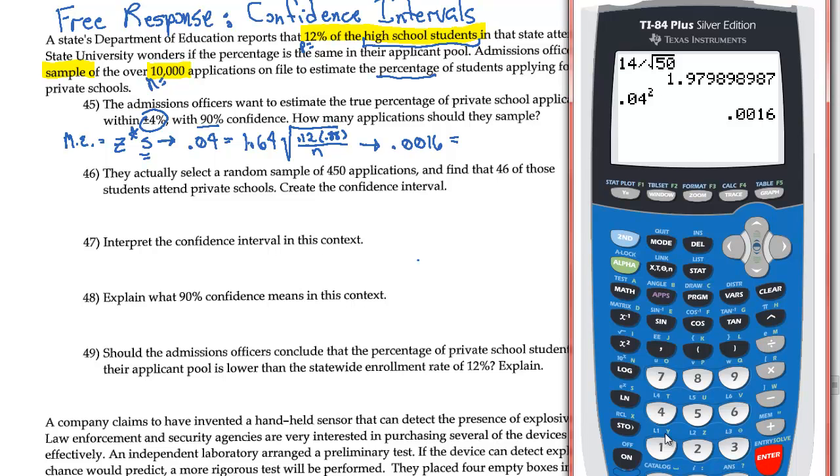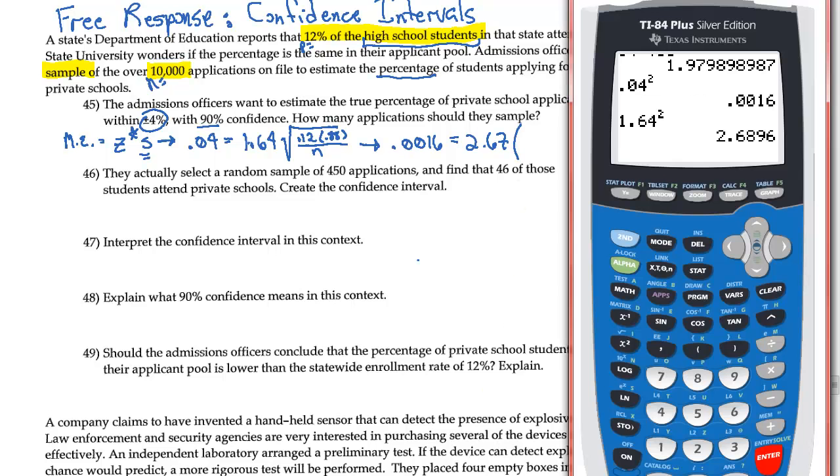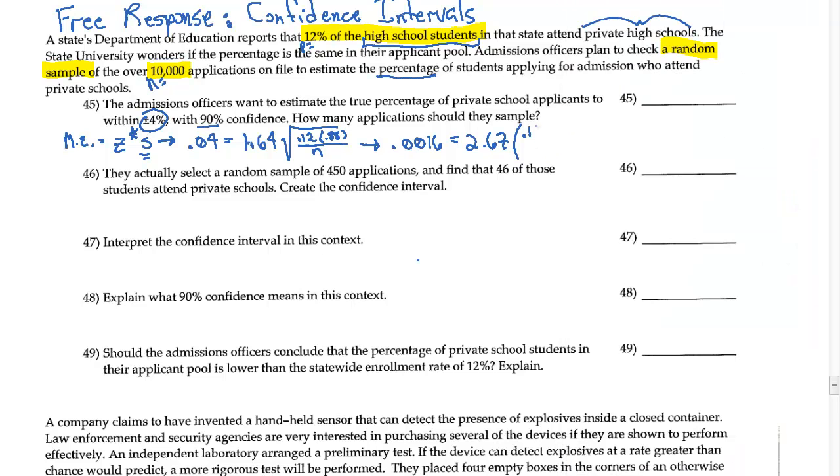And now 1.64 squared is going to give you 2.67, and that's going to be times, let's just go ahead and do 0.12 times 0.88 to get it over with, and you get 0.1056. So you're going to have 0.1056 all divided by the N that I'm looking for.